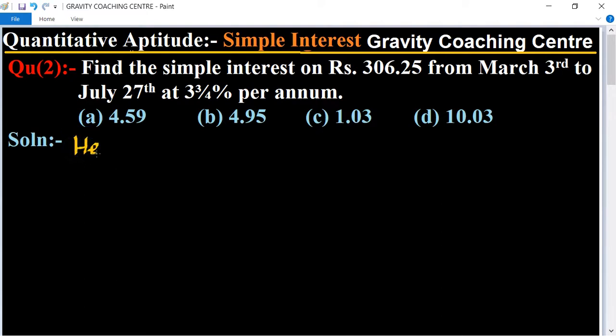Here the principal is given: P equals rupees 306.25, and rate of interest is also given: 3 whole number 3 upon 4 per annum.